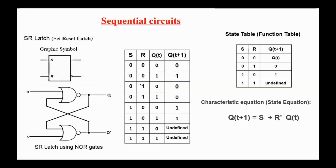If S=0 and R=1, there are two cases. If Q(t) is zero, applying to the first NOR gate produces output zero; zero NOR zero will be one, so Q(t+1) will be zero.